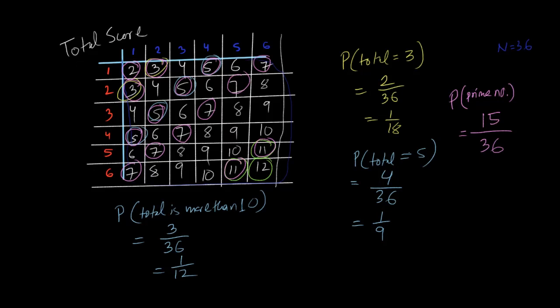Another question might be: find the probability that the total is a perfect square. Out of 36 numbers, the perfect squares are 4 (which appears twice) and 9 (which appears four times) — a perfect square means its square root is an integer. So there are 7 perfect squares in total, giving a probability of 7/36. When you have a dice-throwing problem like this, just use the table instead of calculating totals from scratch.